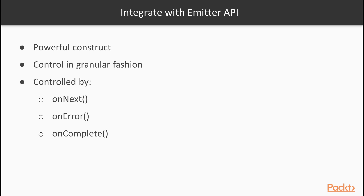First is OnNext — this method is used to supply a new value to the observable. The next one is OnError, which notifies about an error or exception that has occurred internally. And the last one is OnComplete, which notifies an observable that there won't be any new values and it can safely terminate.